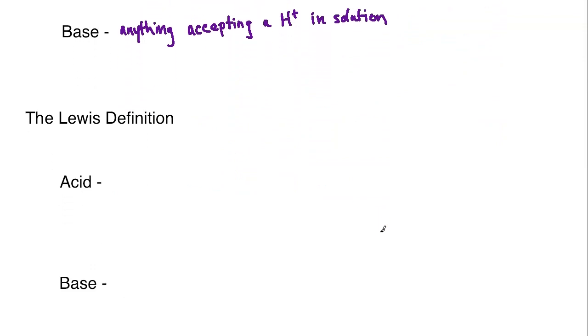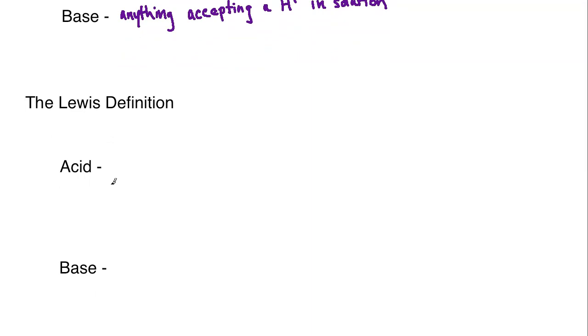And then we get to the Lewis definition. So the Lewis definition is now going to really turn things around and challenge the other two as far as the way that they were stating it. Now, they still support one another. So these all kind of agree with one another. But again, there are certain ones that are more narrow or specific, and then others that are larger in scope in their definition.